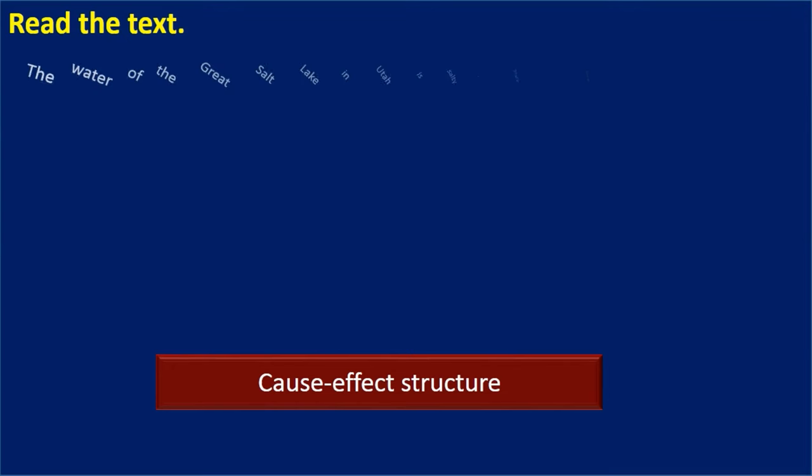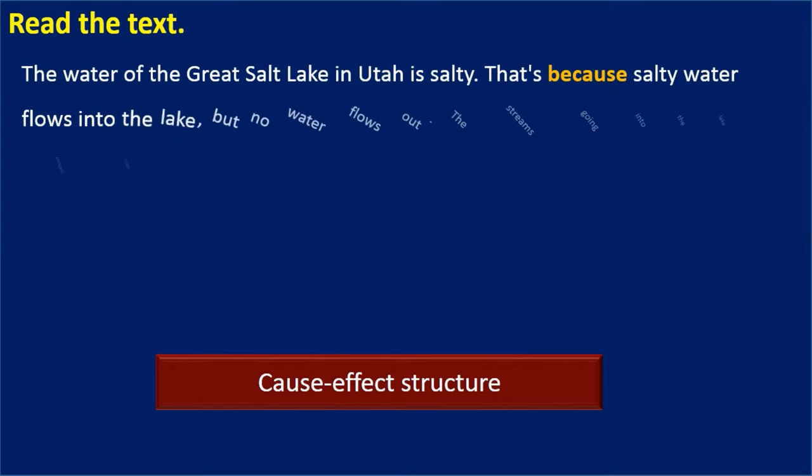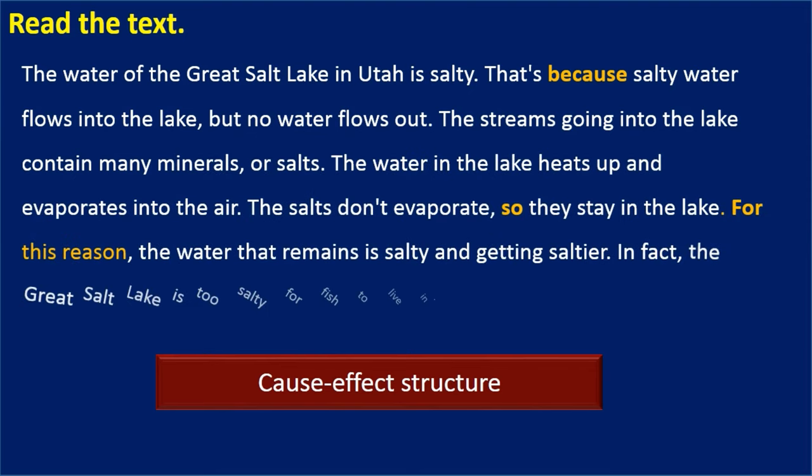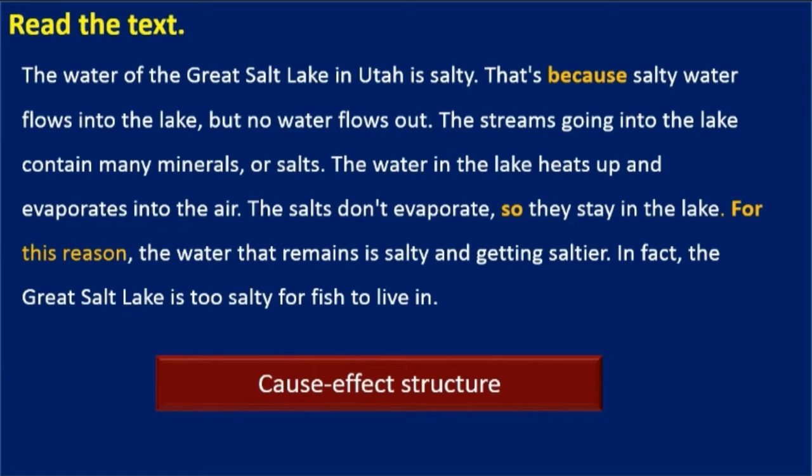In the text, certain words and phrases help to organize ideas in a cause-effect structure. Notice the words 'because' and 'so,' as well as the phrase 'for this reason.'